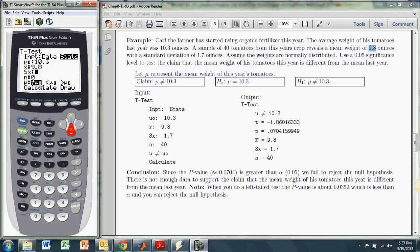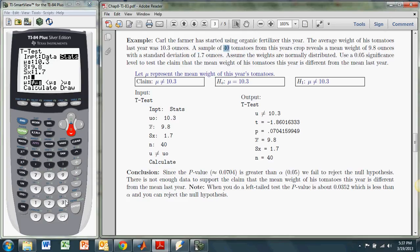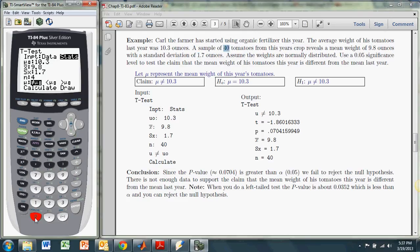And the next thing it wants is an s, which is a standard deviation. Because there's an s, it's the sample standard deviation of the x values. And we have that, the sample standard deviation is 1.7, so we'll put in 1.7. And our sample size is 40, put in 40.